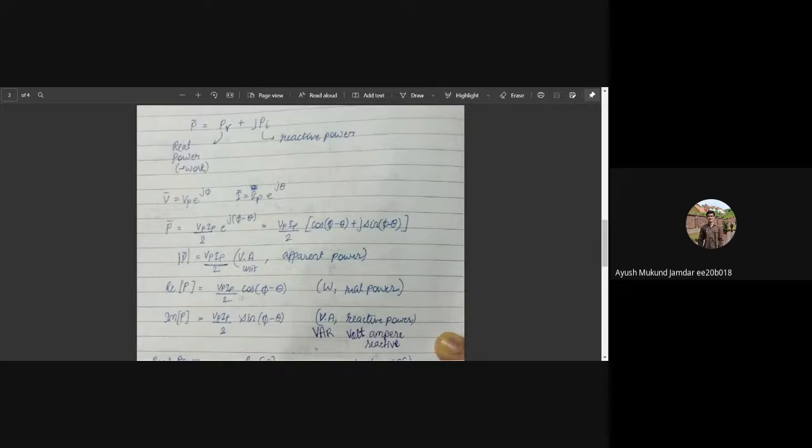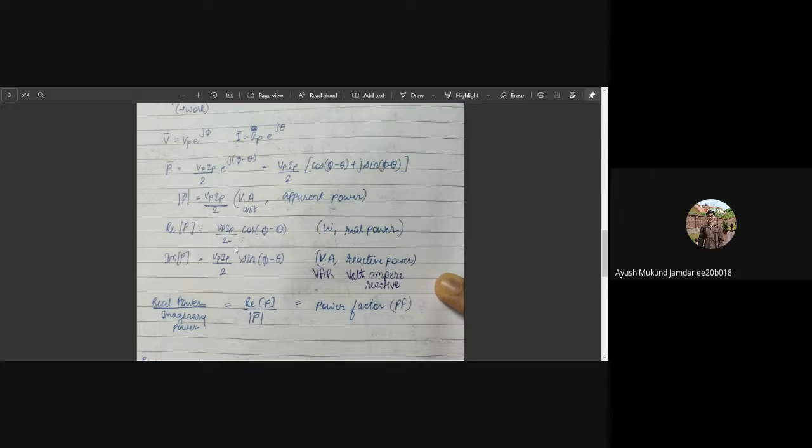Continuing the discussion, we have V bar, the phasor VP times exponential J phi, and I bar the phasor IP times exponential J theta. The complex power P bar will be VP IP by 2 exponential J phi minus theta, which reduces to cos phi minus theta plus J sin phi minus theta. This is the complex average power. The modulus of this quantity is the apparent power, VP IP by 2, with unit V dot A. The real part is the actual power delivered to the load, VP IP by 2 cos phi minus theta, with unit Watt.